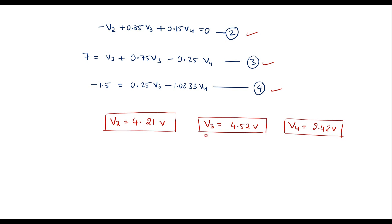Already we have found V1 = 3 volts. Thus, we found V1, V2, V3, and V4 using node analysis. Thank you for watching.